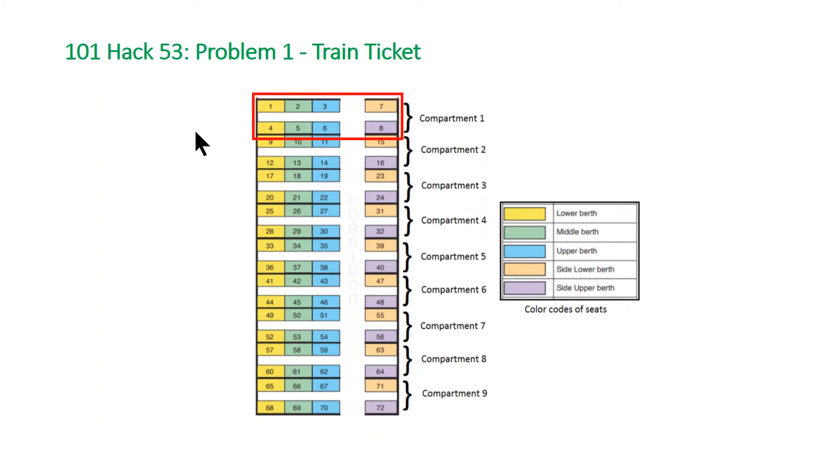And the key is to notice that every single one of these compartments is identical. So basically, if we take our initial idea of building a vector, but only do it for the first eight, and then just take the modulus of whatever the seat number we're given, we can use that as our algorithm. So let's take a look at the code and see what that looks like.